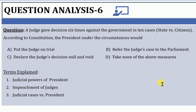In the given question, proved misbehavior or incapacity is not substantiated — it is not proved. Therefore, the president cannot remove the judge on this ground. Obviously, the answer will be: take none of the above measures. The president can remove a judge only on an address made by parliament passed with majority of total membership. Therefore, D is the answer.